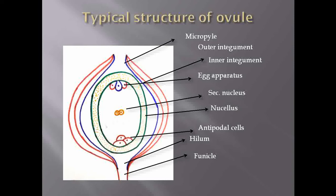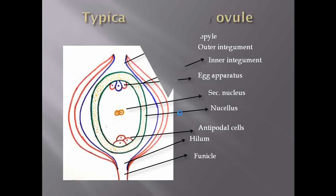To summarize: true polyembryony is when embryo is formed from cells present inside the embryo sac. Whenever there is formation of embryo from cells present outside the embryo sac, that type of polyembryony is categorized as false polyembryony.